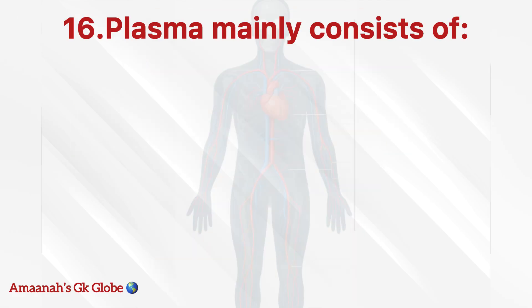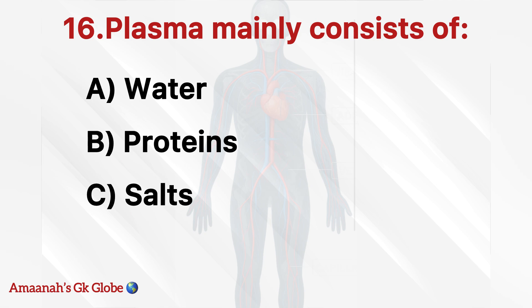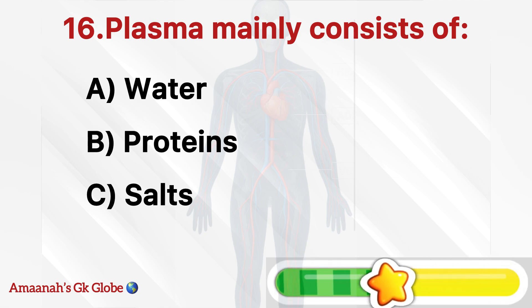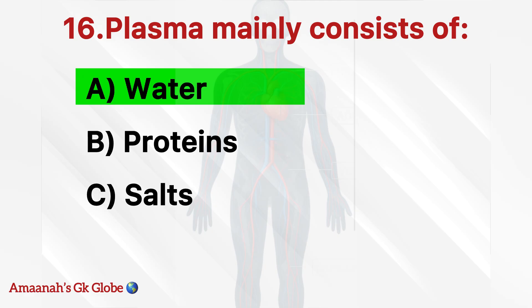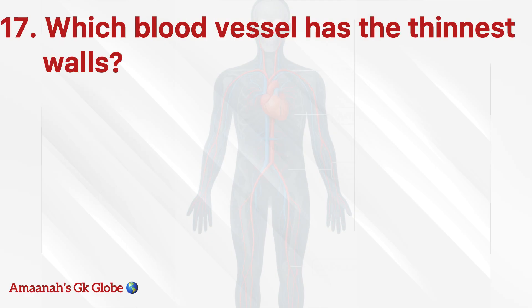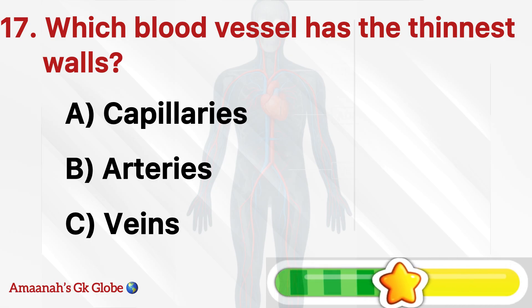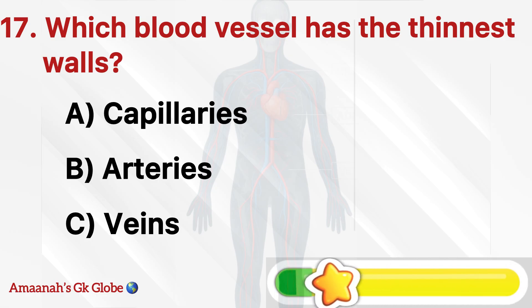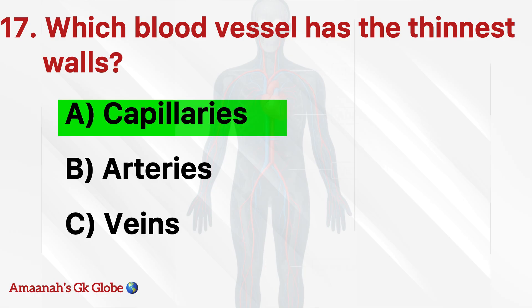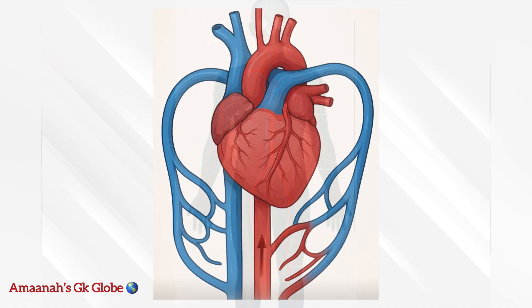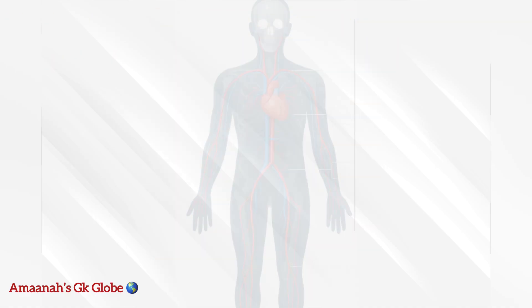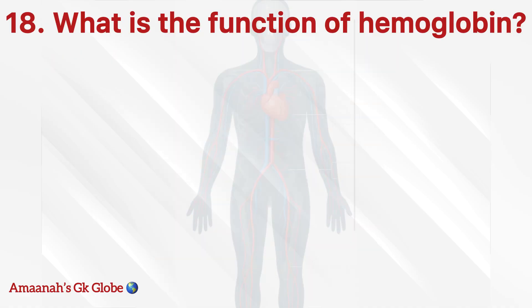What does plasma mainly consist of? Water. Which blood vessel has the thinnest walls? Capillaries. What is the function of hemoglobin?